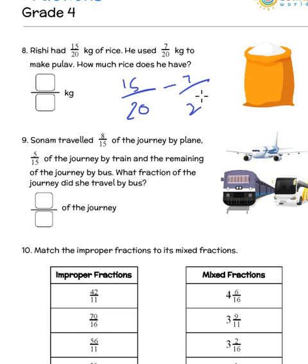When the denominators are same, please write the denominator as is here. And 15 minus 7 would give you 8 which is 8 by 20 kgs.